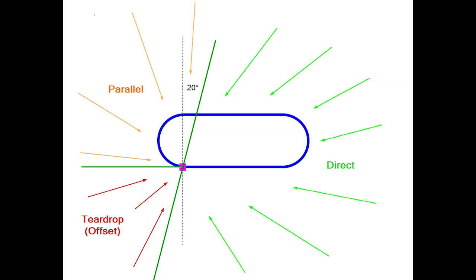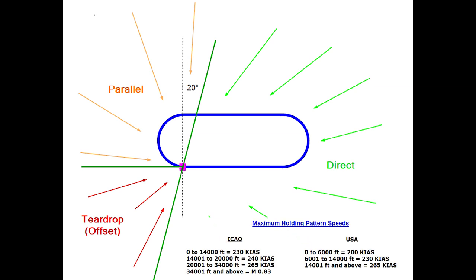The Flight Management Guidance System does this very well, but the pilot is still responsible to ensure the correct entry procedure and the correct speed are being flown so that the aircraft remains in the protected area. Using ICAO speeds: from ground level up to 14,000 feet, maximum 230 knots; 14,001 to 20,000 feet, maximum 240 knots; 20,000 to 34,000 feet, maximum 265 knots; and above 34,000 feet, maximum Mach 0.83. Be aware that the US has a different set of speeds. These speeds ensure you don't go outside the protected airspace of the holding pattern.